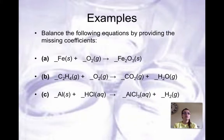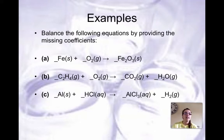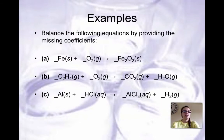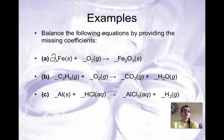Here are some examples of balancing equations — not in your notes, but just for practice. Looking at example A: you are adding iron to oxygen and forming iron(III) or ferric oxide. We have one iron on the left and two on the right, so I'll put a two on the left side — irons are now balanced. Looking at oxygens, we have two on the left and three on the right — an even number on the left and odd on the right.